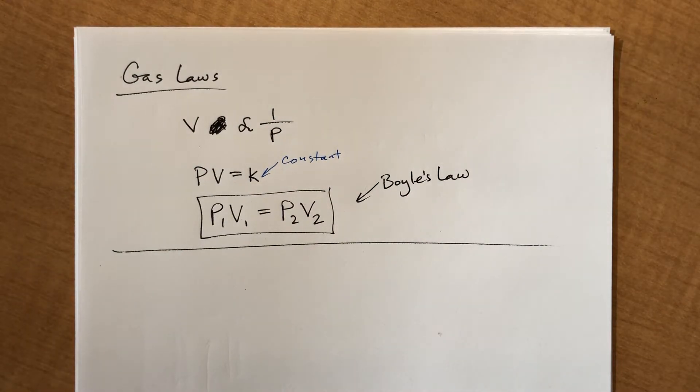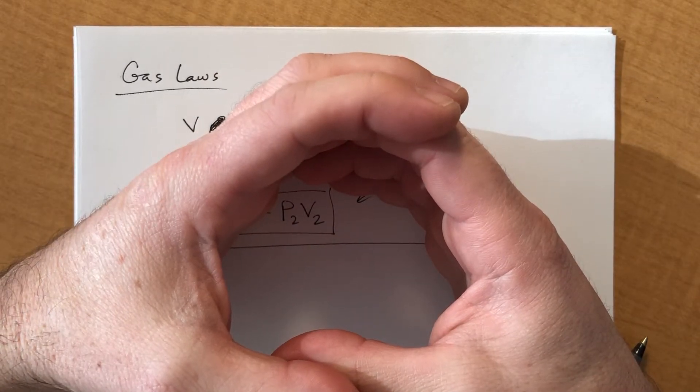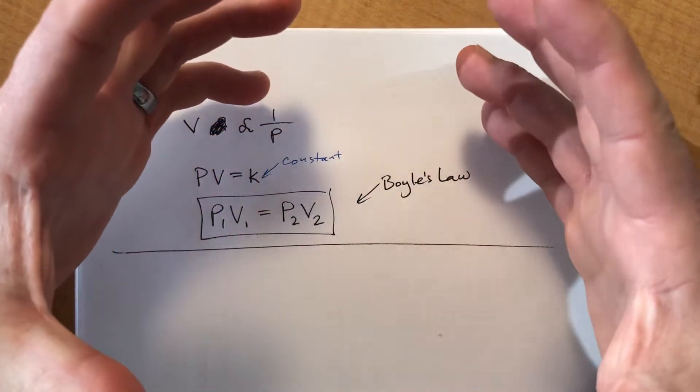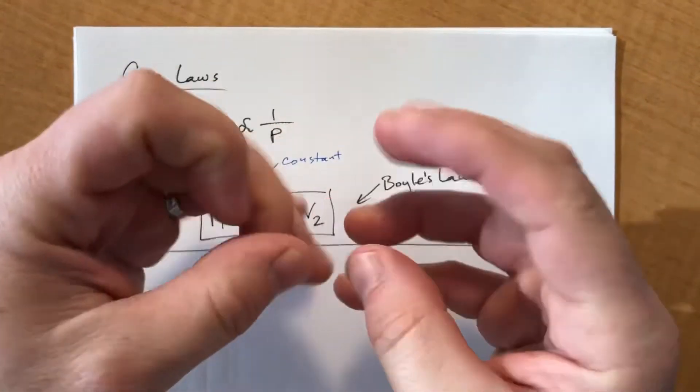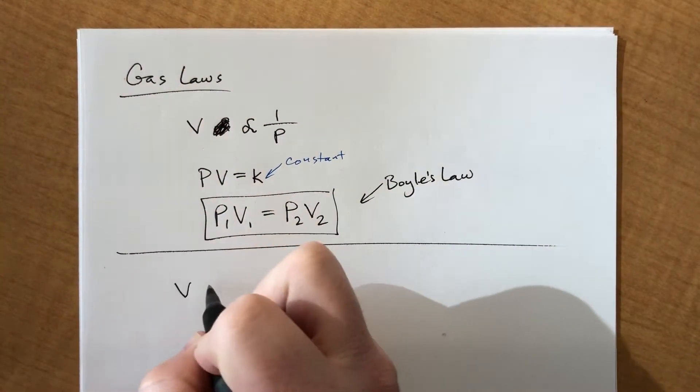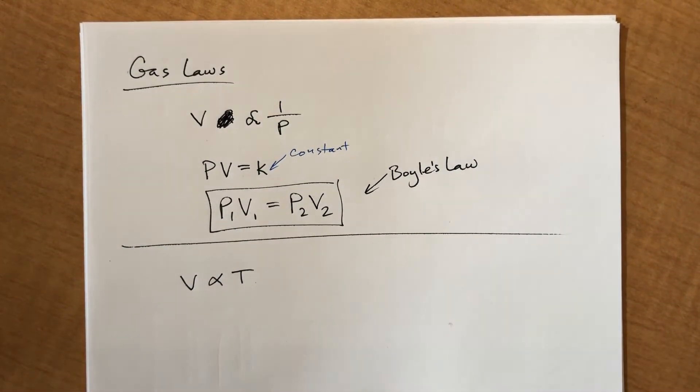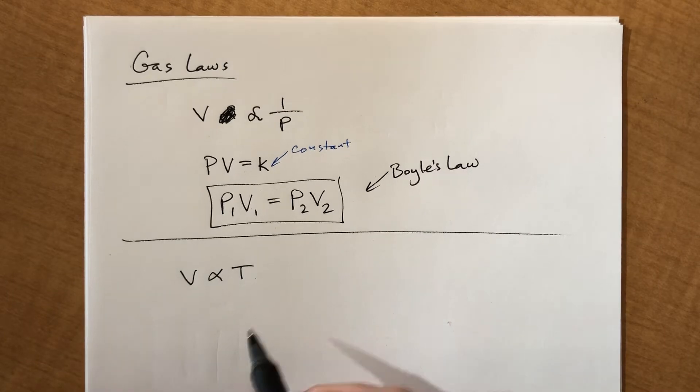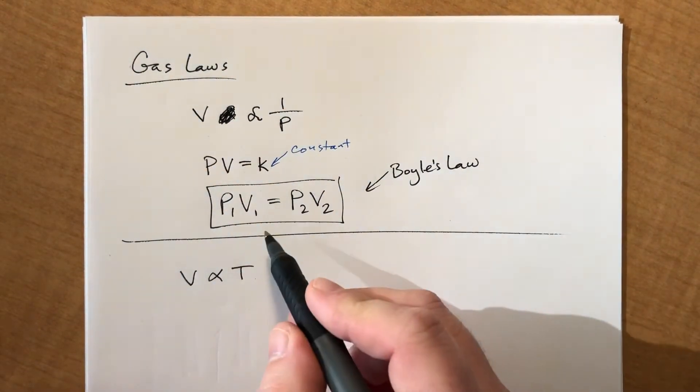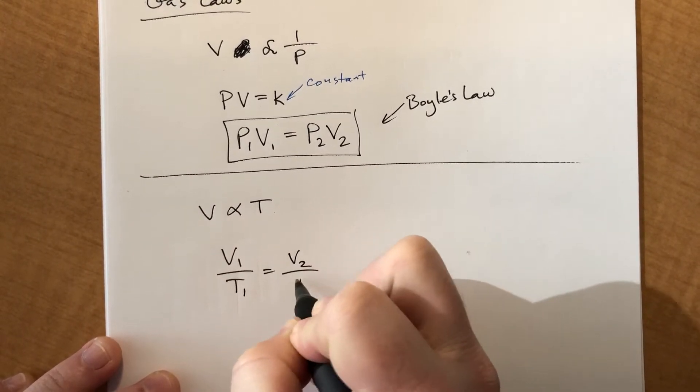If we talk about temperature and volume, if you have a balloon and the pressure is constant but you heat it up, you would expect it to expand, right? It's not going to contract because it got hot. Basically the particles are going to move faster and push harder on the balloon and it's going to expand. So it turns out that volume is directly proportional to temperature.